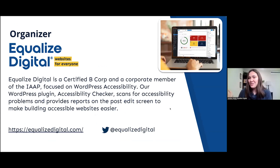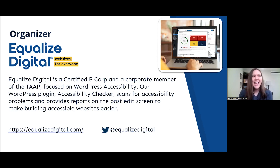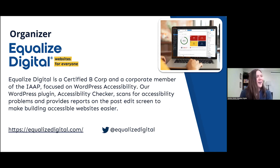I haven't introduced myself yet — I'm Amber Hines, CEO of Equalize Digital, the organizers of this meetup. We are a B Corporation, which means we try to do a lot of good in the world. We have a plugin called Accessibility Checker that scans WordPress websites for accessibility problems and provides reports right in the WordPress dashboard. You can find out more at equalizedigital.com. We're also on Twitter at Equalize Digital.